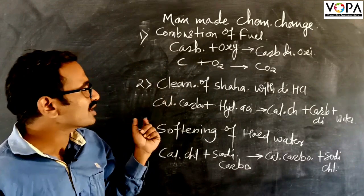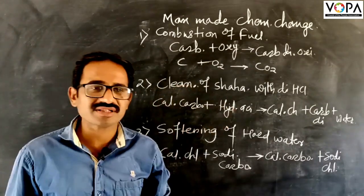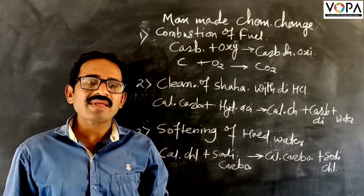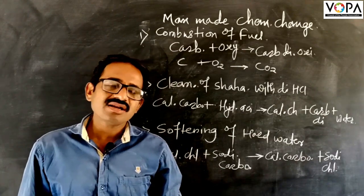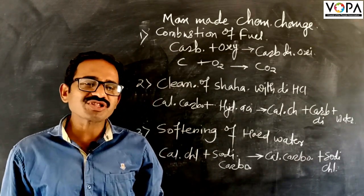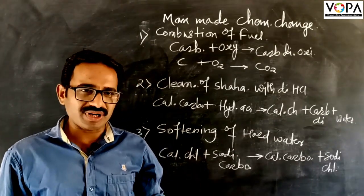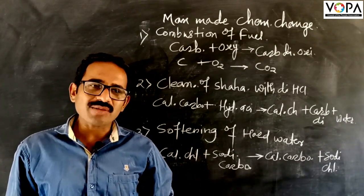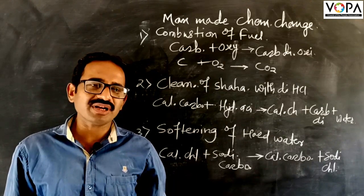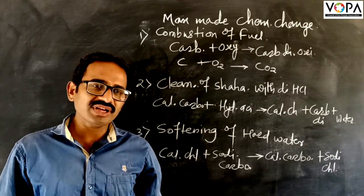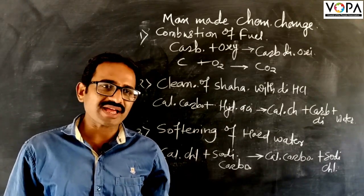Next, the man-made chemical change is cleaning of Shahbadi's style with the help of hydrochloric acid. The chemical composition of Shahbadi's style is calcium carbonate. We clean the Shahbadi's style, that is calcium carbonate, with dilute hydrochloric acid.